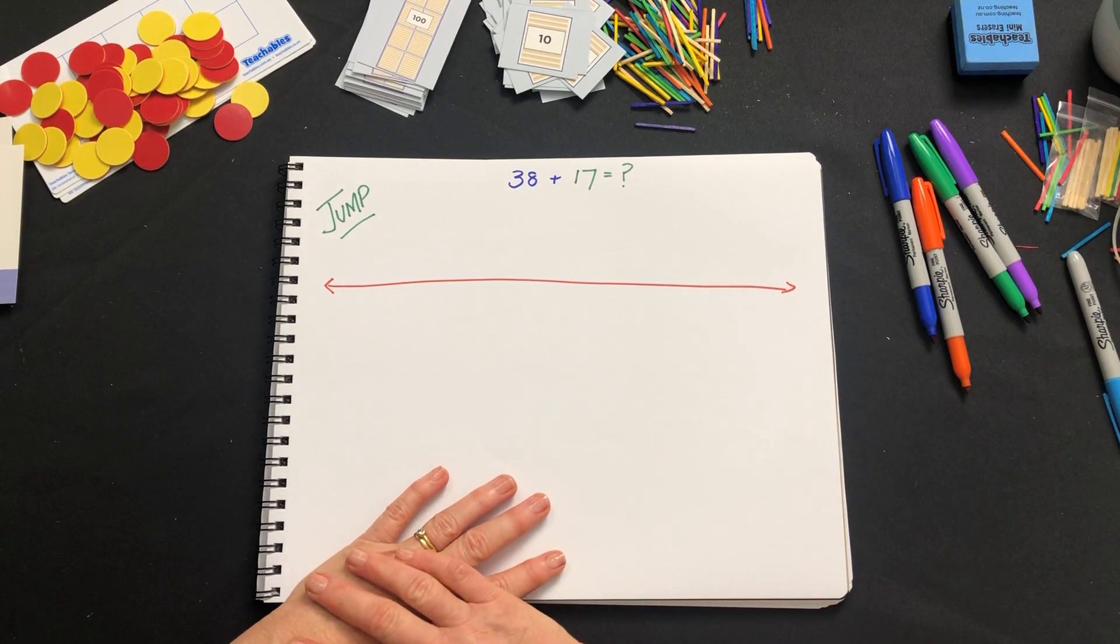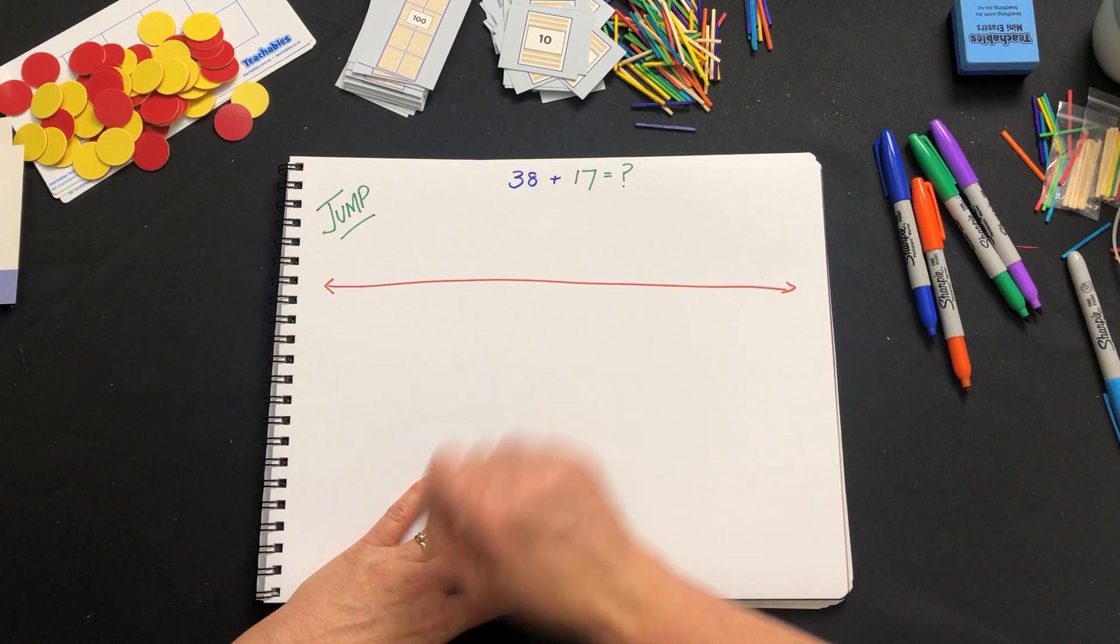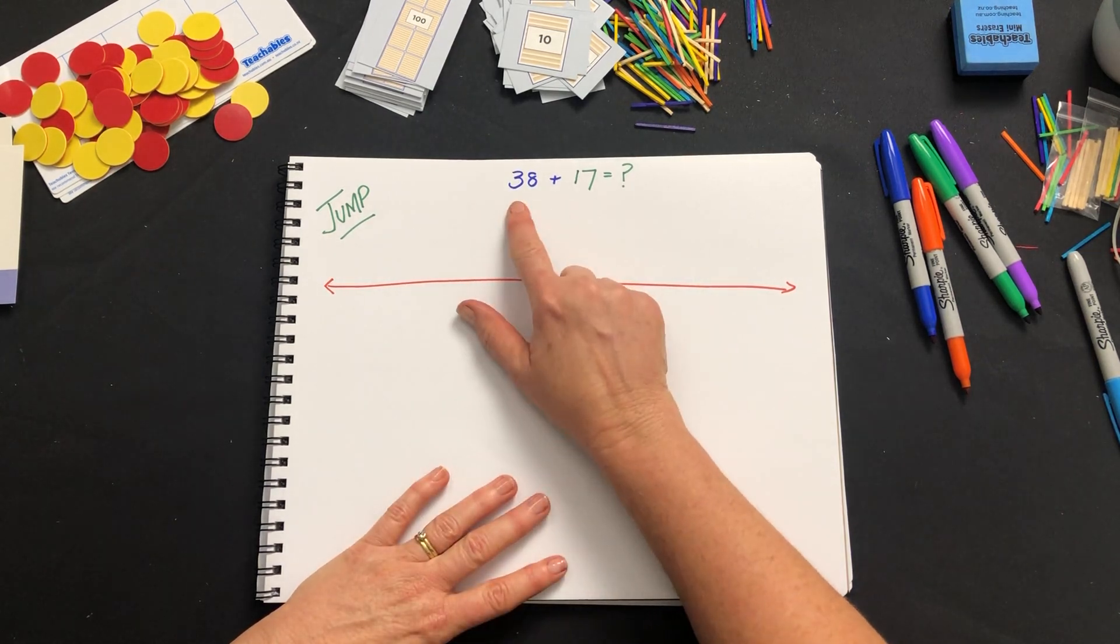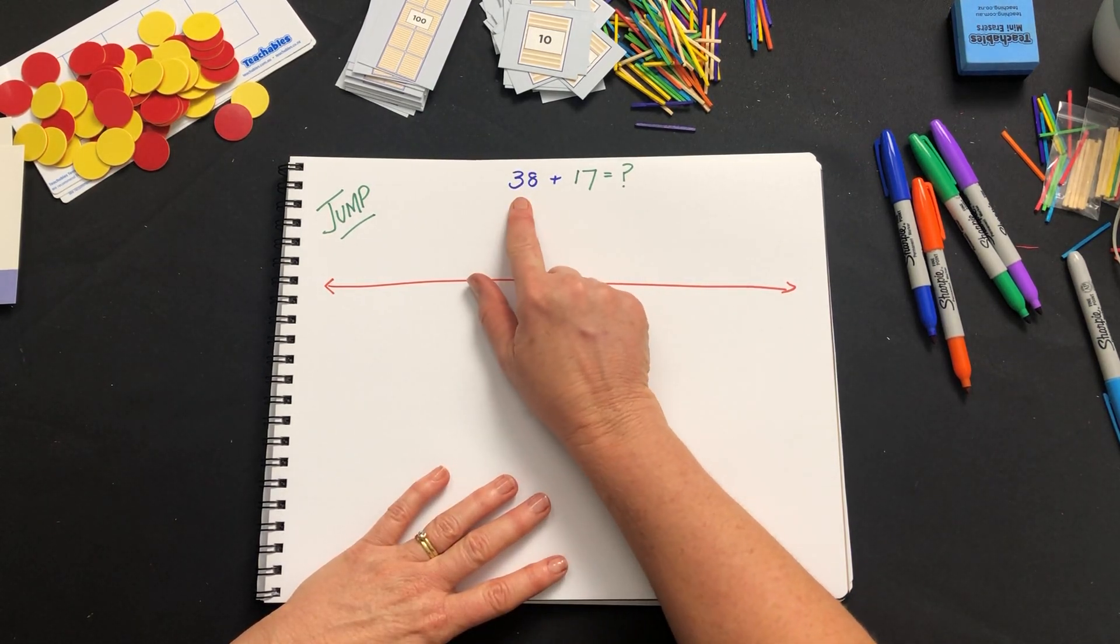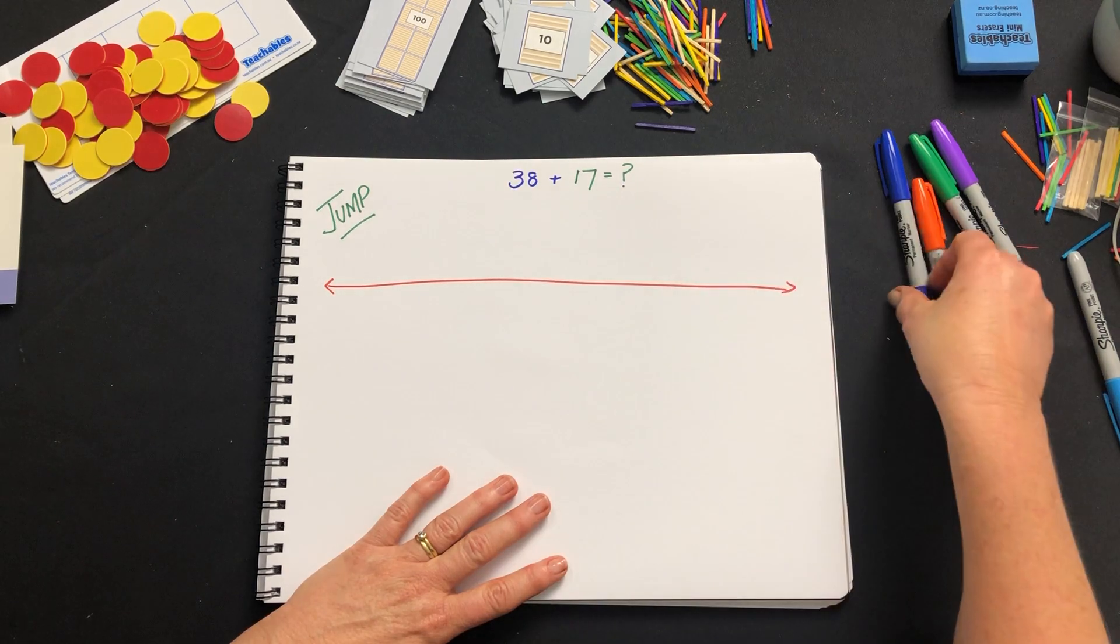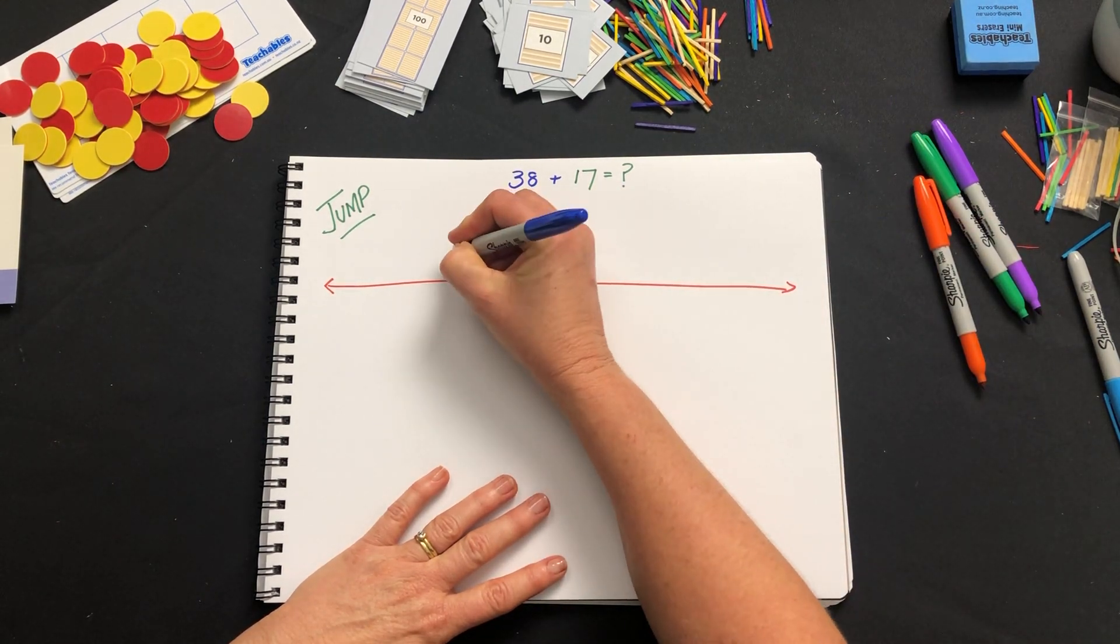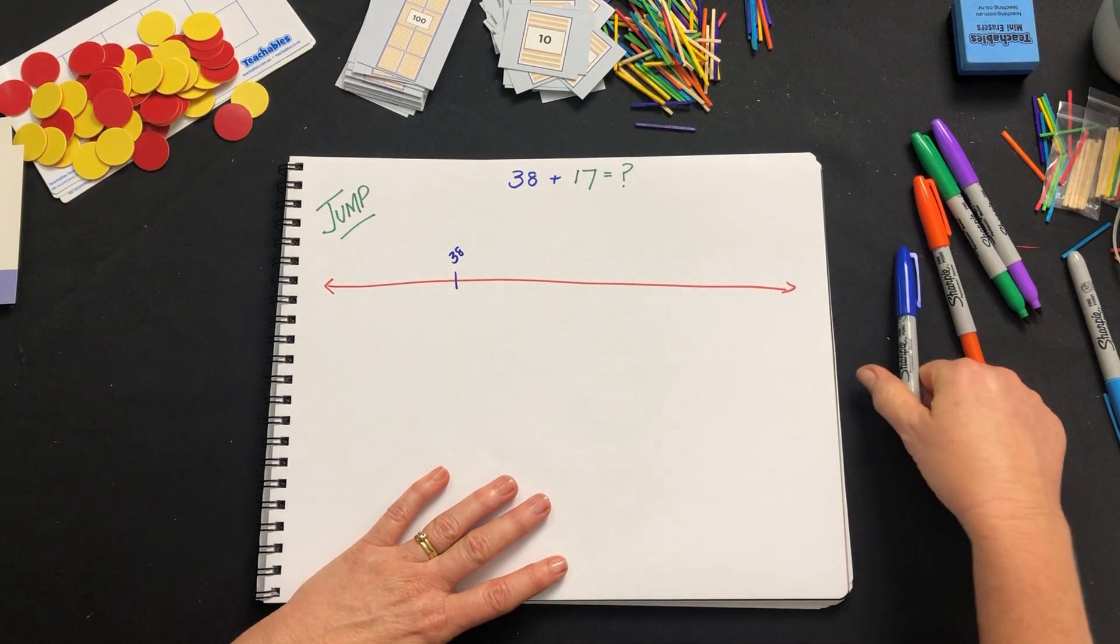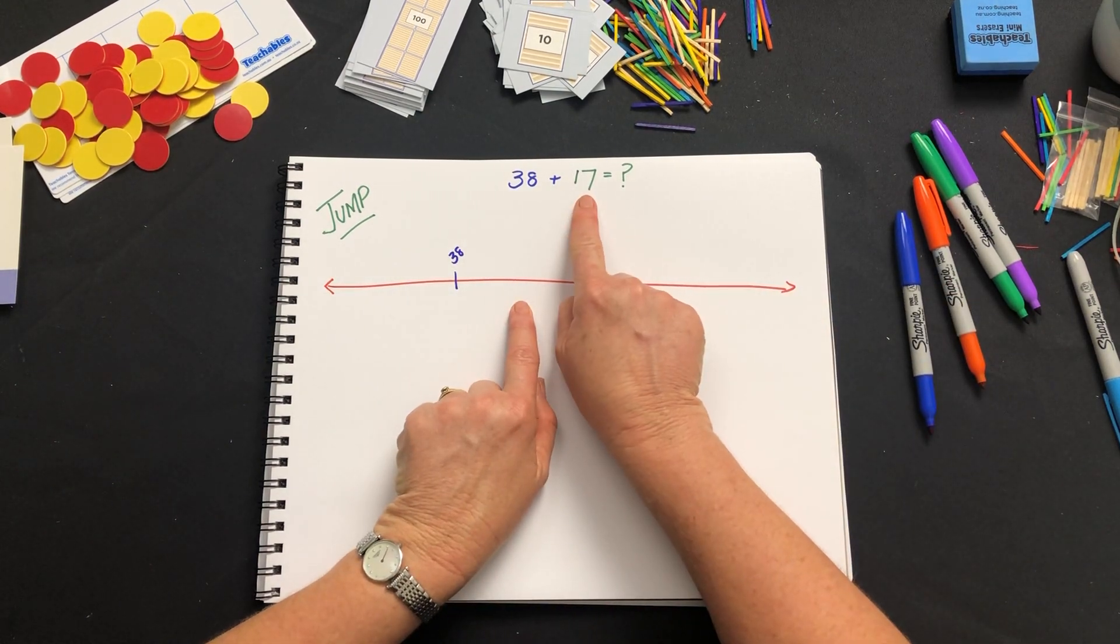I'm going to front load and if you haven't heard that term before, front loading when we're doing addition means that we start with the bigger number. So I'm going to start with 38 and then I have to add on this 17.